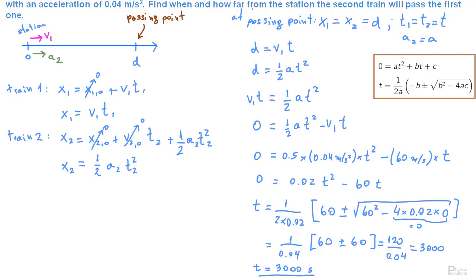We also need to find how far from the station. So for the distance, as usual, we can take from these two equations that we derived before, we can take either of the two. The first one is simpler. So I will do that here on the side. So I will rewrite the first equation. D is v1 times t. v1 we know is 60 meters per second. And the time we just found is 3000 seconds.